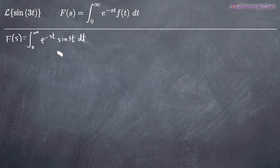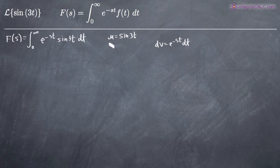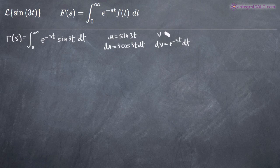In order to solve this integral, we're going to need to use integration by parts. So we'll set u equal to sine of 3t, and dv is going to be equal to e to the negative st dt — remember, s is a constant here. Then we'll find the derivative of u to get du. The derivative of sine is cosine, but remember by the chain rule, we have to multiply by the derivative of 3t as well, so we'll get 3 cosine of 3t dt. Then we integrate dv to find v, and we get 1 over negative s times e to the negative st.